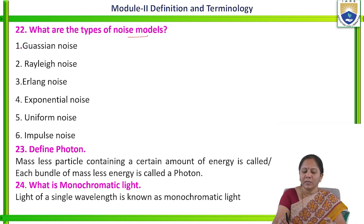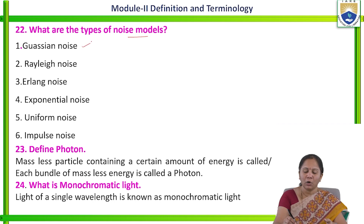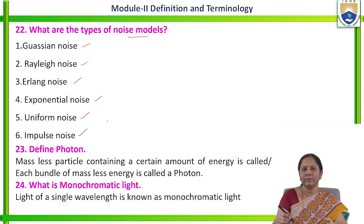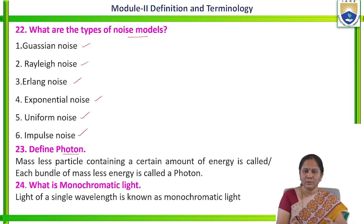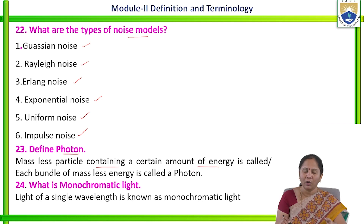What are the different types of noise models? Different types of noise models include Gaussian noise, Rayleigh noise, Erlang noise, exponential noise, uniform noise, and impulse noise. Define photon — we learned this while discussing the electromagnetic spectrum. A massless particle containing a certain amount of energy is called a photon, or it can also be defined as a bundle of massless energy.